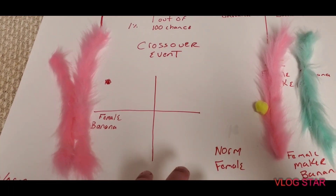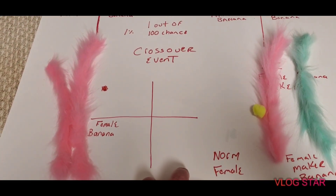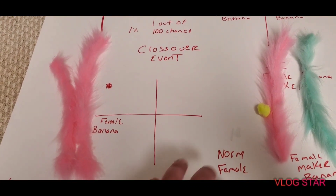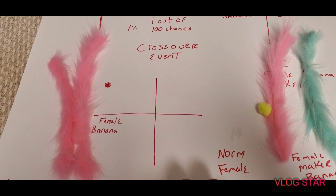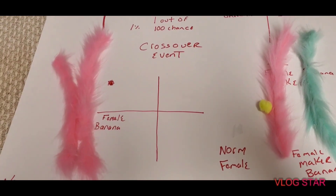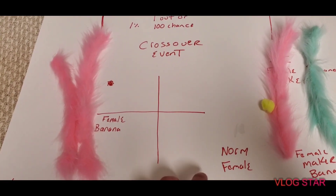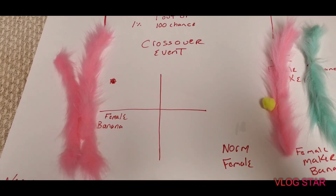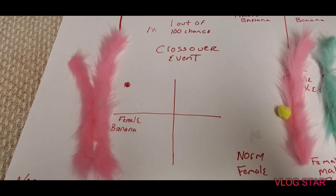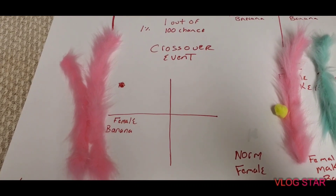Banana does have a super version. When you go to a super banana, you're basically back to square one, where that super banana male should typically produce half females and half males just like a normal one would. Pair that up with another banana and you start seeing different things — super bananas being made. Banana is a very interesting co-dominant gene.